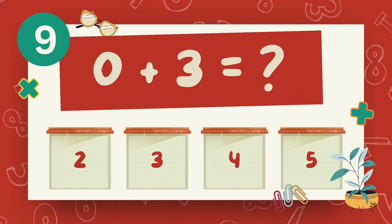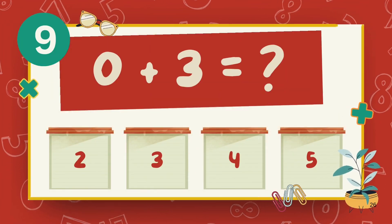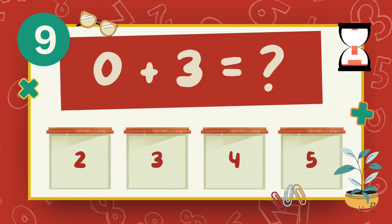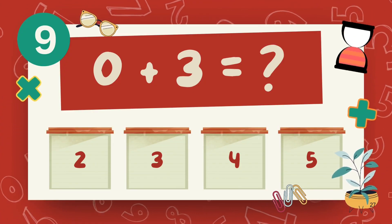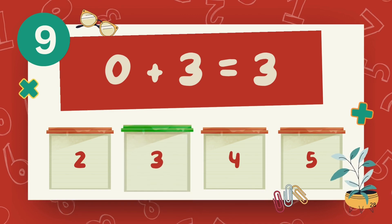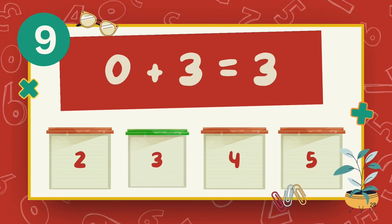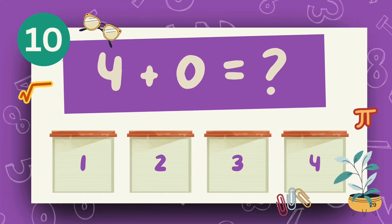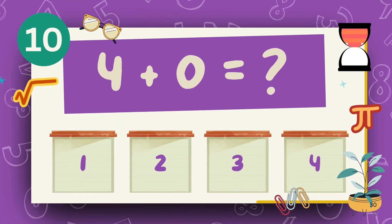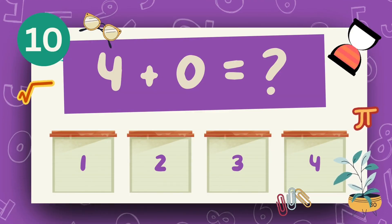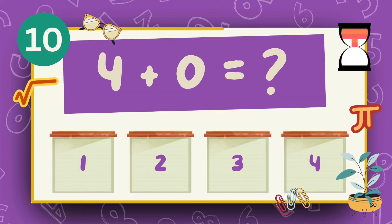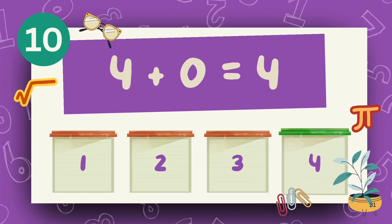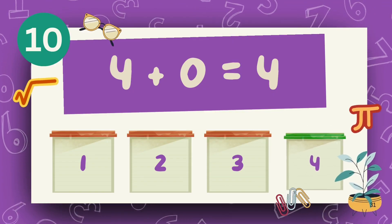What is 4 plus 3? The answer is 3. What is 4 plus 0? The answer is 4.